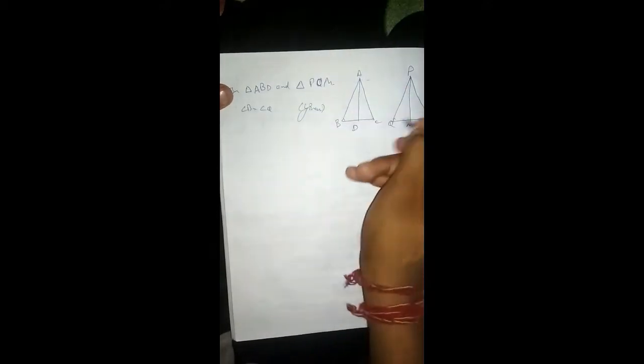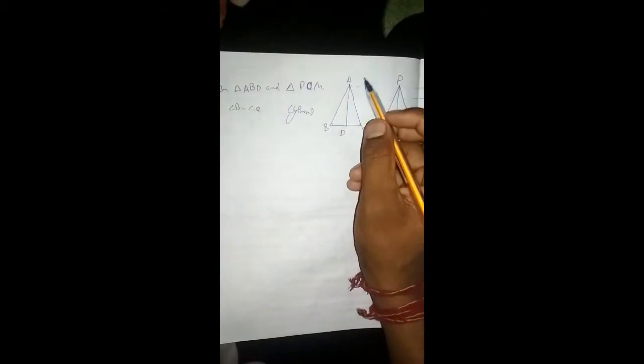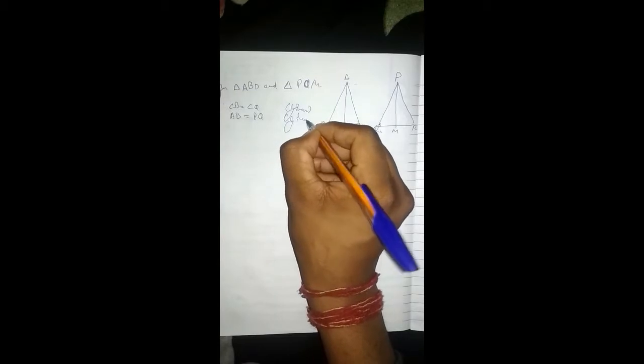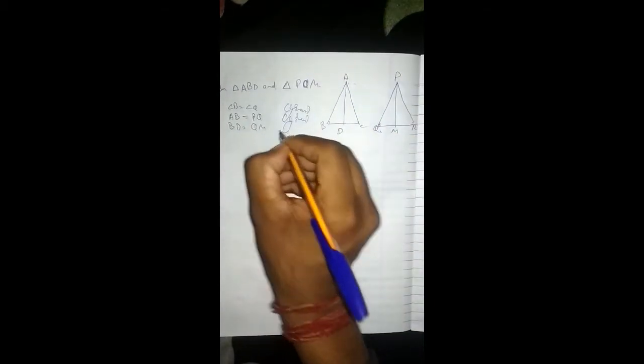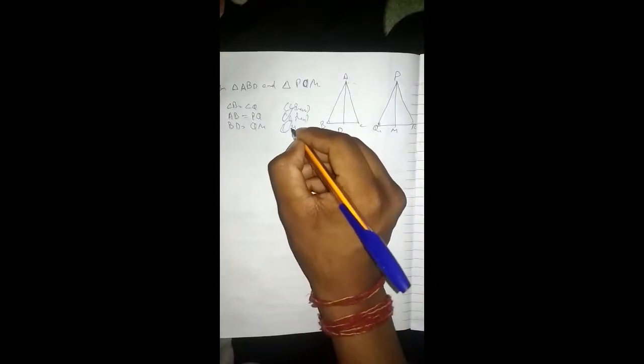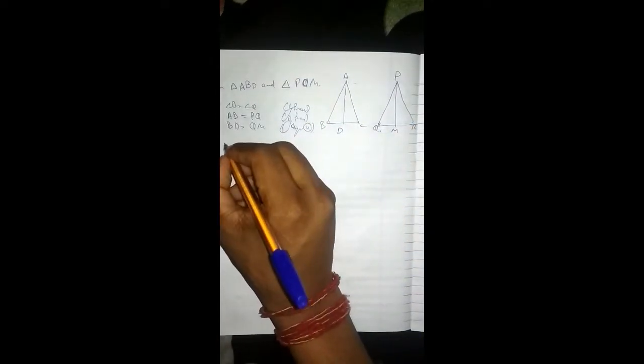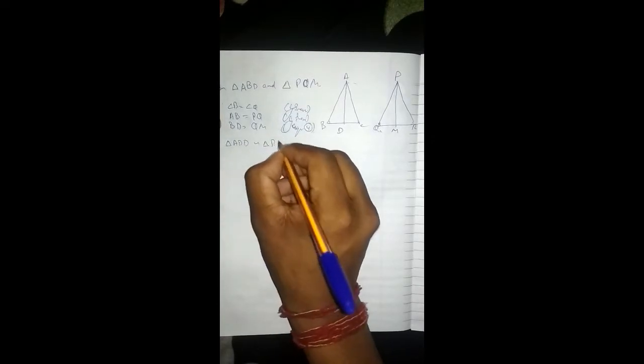similar triangles: angle B is equal to angle Q, AB is equal to PQ given, BD is equal to QM. From the fourth equation, we can find that triangle ABD is similar to triangle PQM.